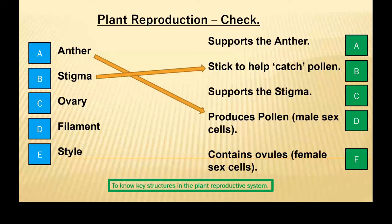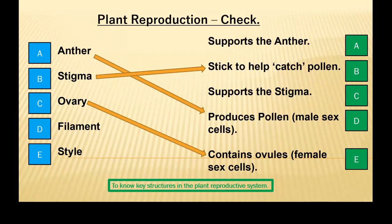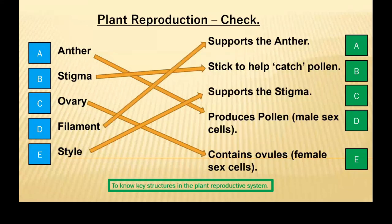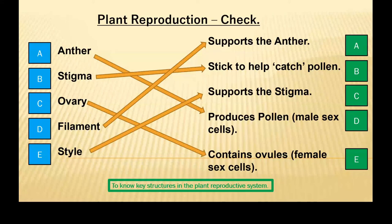Blue C, the ovary, that will match to green E — the ovary will contain the ovules. And the ovules are the female sex cells. The filament — blue D — will support the anther. And the style — blue E — will support the stigma. So to recap: the anther produces pollen, the male sex cell; the stigma is the sticky surface to catch pollen; the ovary contains ovules, the female sex cells; the filament supports the anther; and the style supports the stigma.